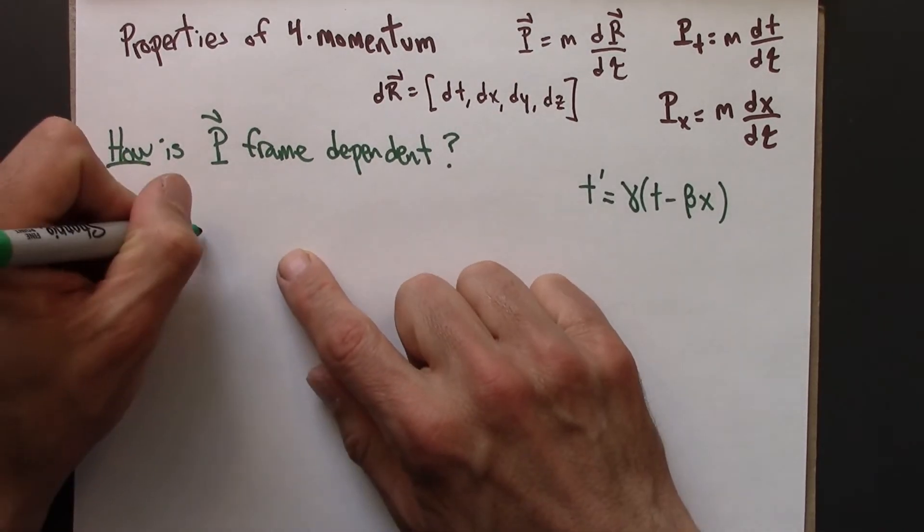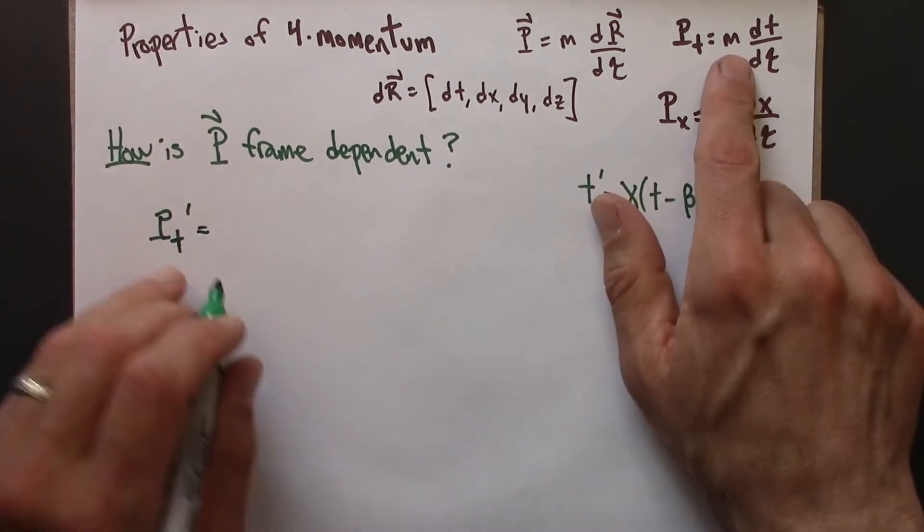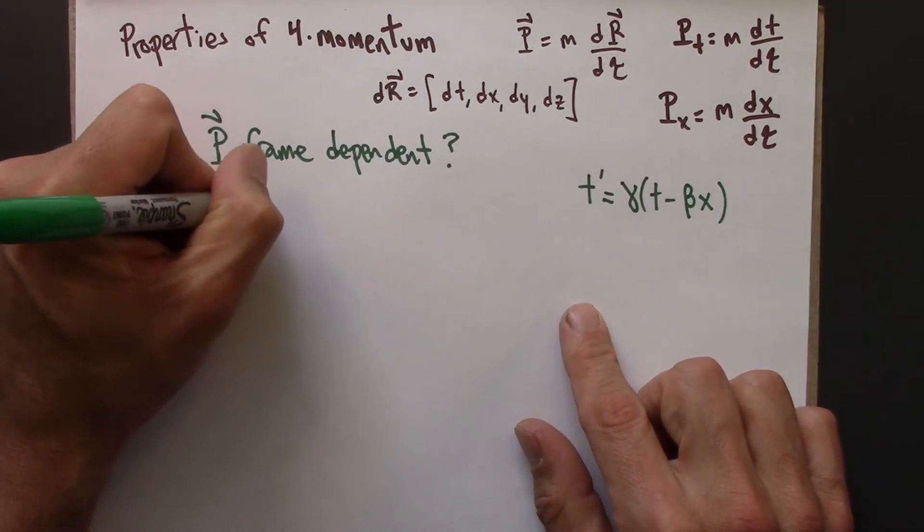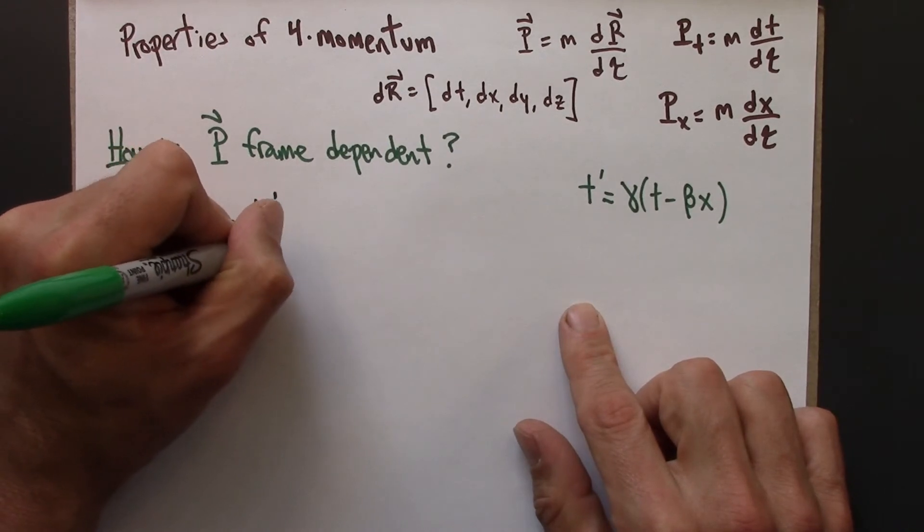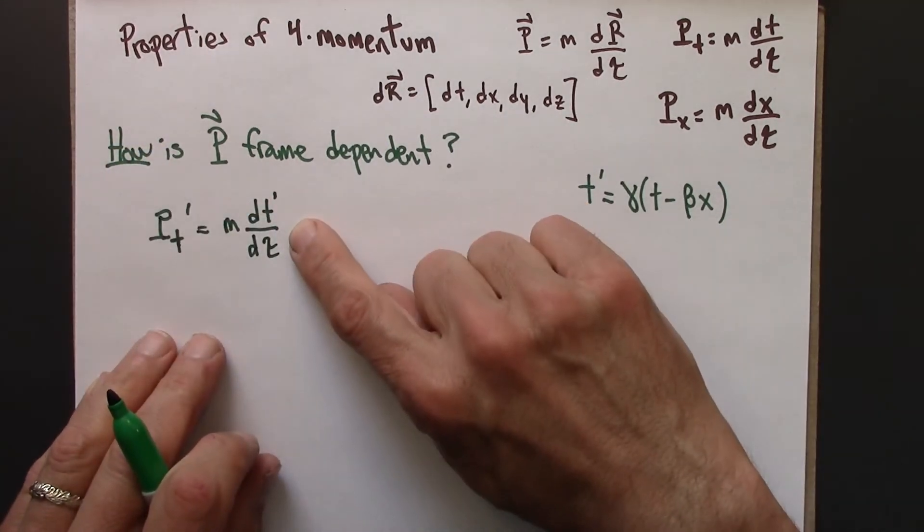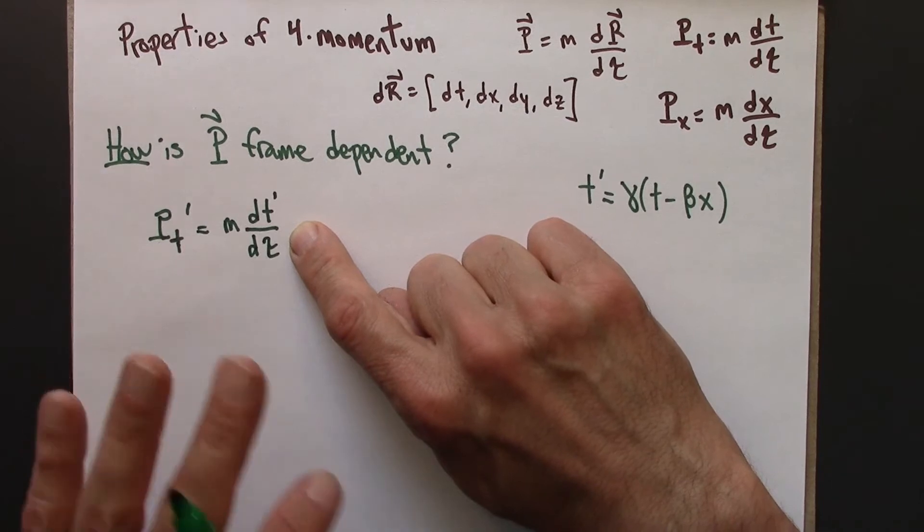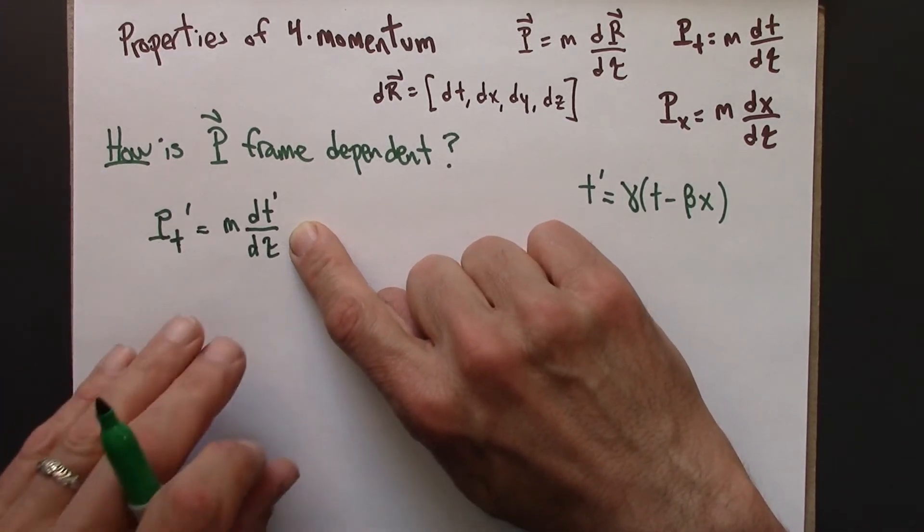Well, what is that? That would be m and a time interval measured in the moving frame. And tau doesn't get a prime, because tau is the same for everybody. That's a property of the object. It has nothing to do with the frame.